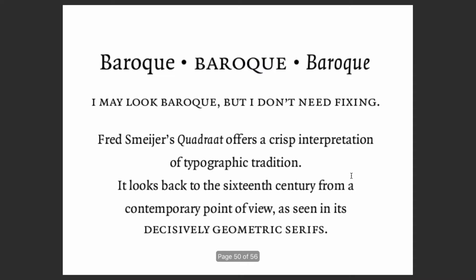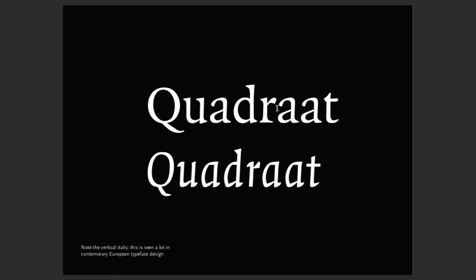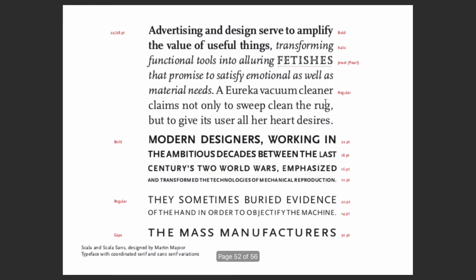Here's Fred Smeijers' Quadraat, offering a crisp interpretation of typographic tradition — looking back to the 16th century from a contemporary point of view, with decisively geometric serifs. Look at that A: it starts to get very sharp. This is a signifying idea that a lot of Dutch designers use — geometric serifs. In regular weight and italics, the serifs feel chunky, not a refined line, more like you took a ruler and just started drawing letters with it.